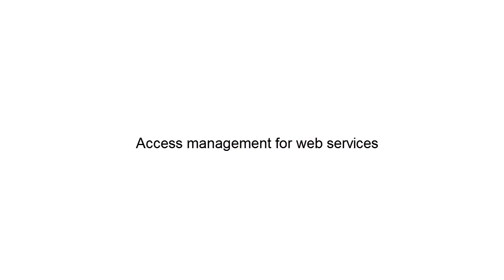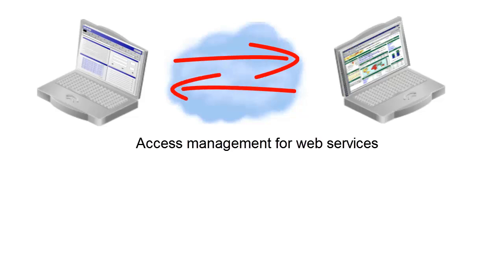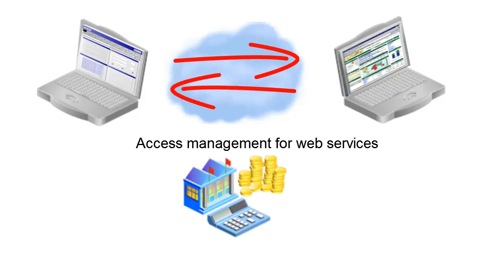Access not only means users trying to get access to various systems — it could also mean web services trying to get access to other web services. For example, if I am trying to get a loan for my home, I can go to my bank and apply. The web service processing my application at my bank might want to talk to a certain credit bureau to check my credit score. So my bank's site gets my credit scores from other web services, and there should be web service to web service security as well.